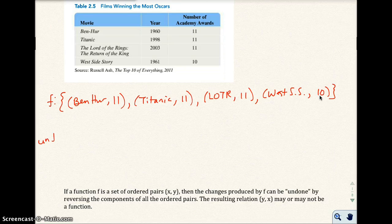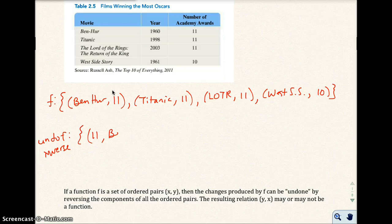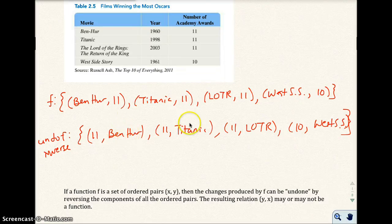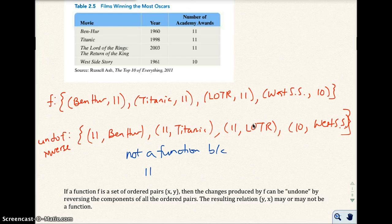Let's say I inverse it, or undo F. We're going to switch all the inputs and outputs, just like we did a moment ago. We reverse it: 11 gives Ben-Hur, 11 gives Titanic, 11 gives Lord of the Rings, and 10 gives West Side Story. This is no longer a function, because if I input 11 — if I type in the computer how many movies won 11 Oscars — out would pop Ben-Hur, Titanic, and Lord of the Rings. So 11 yields more than one output or movie.